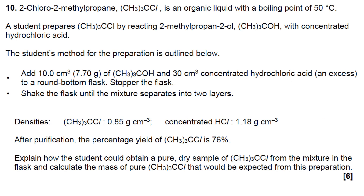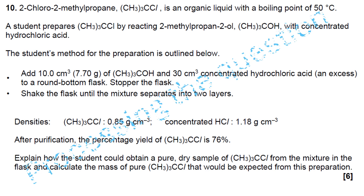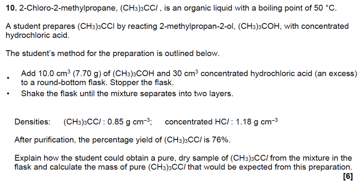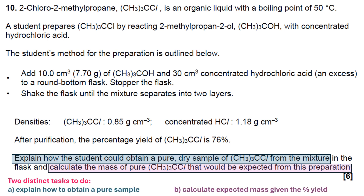So this is our question. I'm going to start by taking you through how we might want to process it before we actually start constructing the answer. Looking at the question, I'm going to colour-code the two different tasks that you have to do. They are: explain how to obtain a pure sample, and calculate expected mass given the percentage yield.